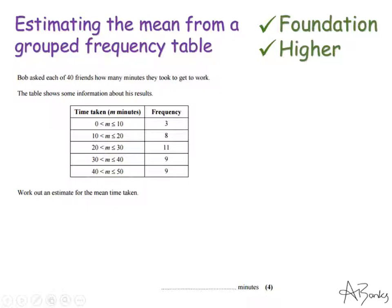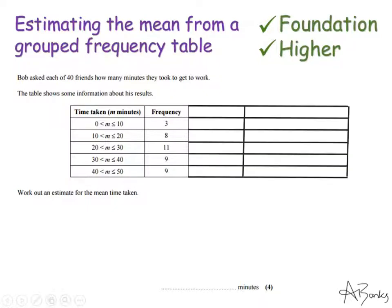So some questions they will give you a table with some extra columns drawn in. If like this question they don't give you those extra columns I would start by drawing two extra columns on. So these are my extra columns. The first one I'm going to use to write down my midpoints.